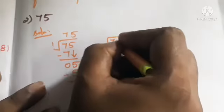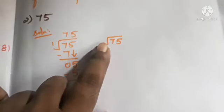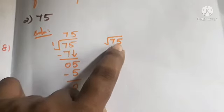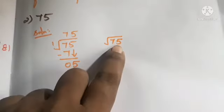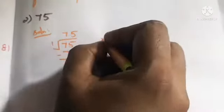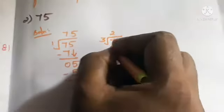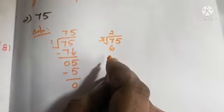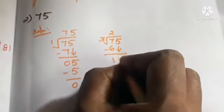Check 2: it is not possible because the ones place of 75 is 5, which is odd. We can only divide by 2 if the ones place is an even number. Check 3: in the tens place, how many 3s in 7? Two 3s are 6; 7 minus 6 is 1. Bring down 5 to get 15.